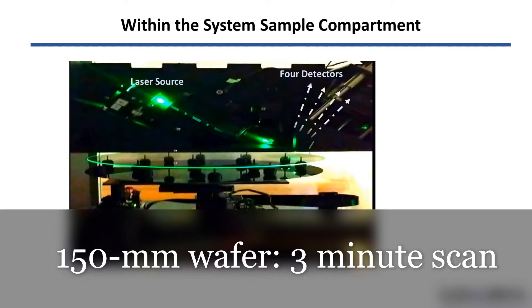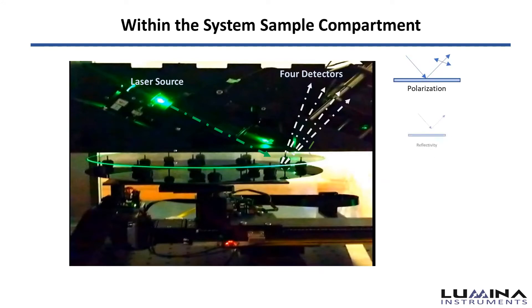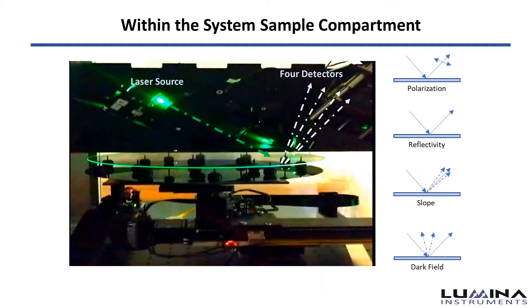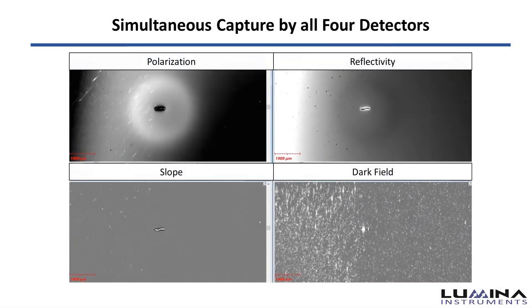The reflected, refracted, and scattered light is then captured simultaneously by four detectors – polarization, reflectivity, slope, and dark field. Each detector generates its own image and provides useful information regarding defects on the surface of the sample.